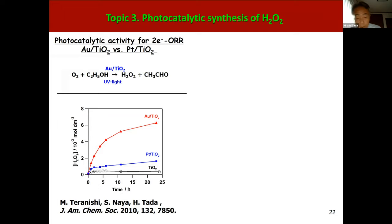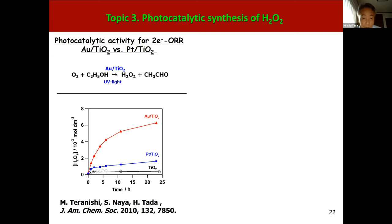Let me move to the last topic, photocatalytic synthesis of hydrogen peroxide. This figure compares the photocatalytic activity of TiO2, Pt/TiO2, and Au/TiO2 for 2-electron oxygen reduction. In this case, ethanol was added as a sacrificial electron donor. Only a slight amount of hydrogen peroxide is generated in the TiO2 system. Pt/TiO2 produces about 1 mM H2O2 after 24-hour irradiation. On the other hand, Au/TiO2 shows much higher photocatalytic activity and several mM H2O2 is produced. This striking photocatalytic activity mainly results from the excellent electrocatalytic activity of gold nanoparticles for 2-electron oxygen reduction.